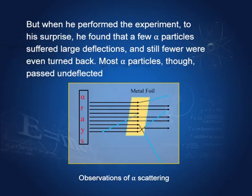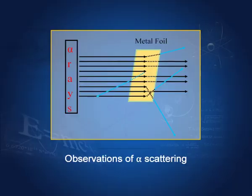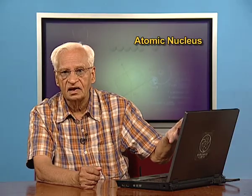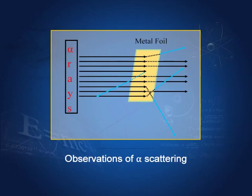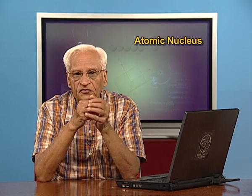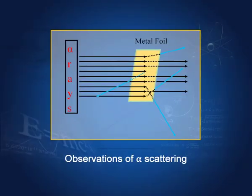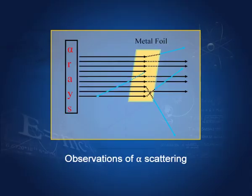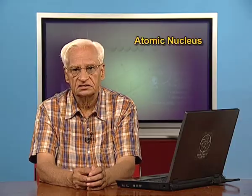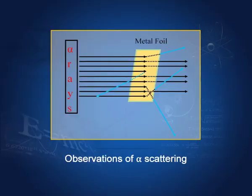But when he performed this experiment — that is, he shot alpha rays on a metal foil — he found to his surprise that not only did some alpha rays suffer large deflections, some of them were even reflected backwards. That gave him the idea that the atom is mostly vacuum, mostly empty, so that most of the alpha rays can go through it. At the center of the atom, he thought there must be a part which has all the mass and all the charge of the atom. That is why, because this charge is concentrated, some of the alpha rays suffered very large deflections and some were even sent back.